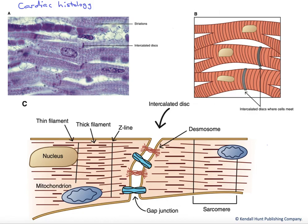In this series of figures, we want to look at cardiac histology, or in other words, the microscopic anatomy of cardiac tissue. In the upper left here, in panel A, we have a photomicrograph. This is simply a picture taken through a microscope, which allows us to see the subcellular structures.